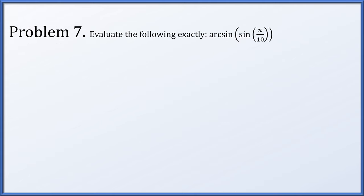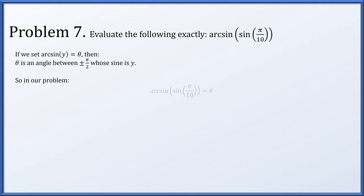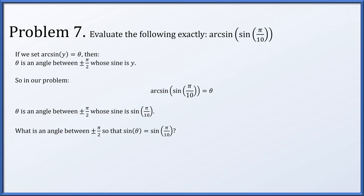In problem 7, let's evaluate exactly the arcsine of the sine of pi over ten. Setting the arcsine of y equal to theta means theta is the angle between plus or minus pi over two whose sine is y. So we want an angle between plus or minus pi over two such that its sine equals the sine of pi over ten. We can just take pi over ten — it is between plus or minus pi over two, and its sine is definitely the same as the sine of pi over ten.